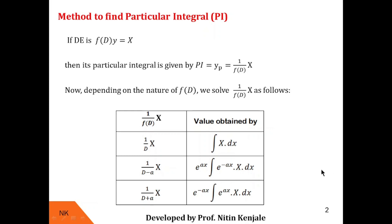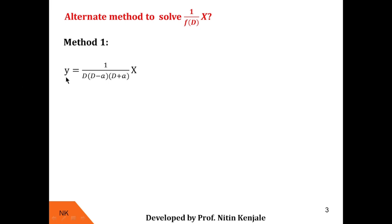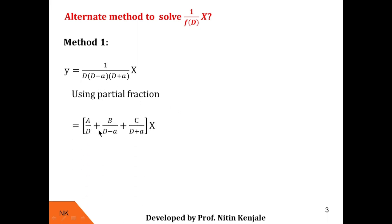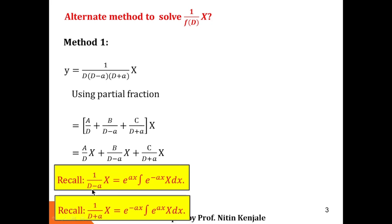Next we see what happens if f(D) is a product of all three cases — that is, f(D) = D·(D − a)·(D + a). The particular integral is then 1/[D·(D − a)·(D + a)]·X. To solve this we have two approaches. In the first approach, we use partial fractions to split this into three separate terms and then individually operate each term on X using the formulas we just established.